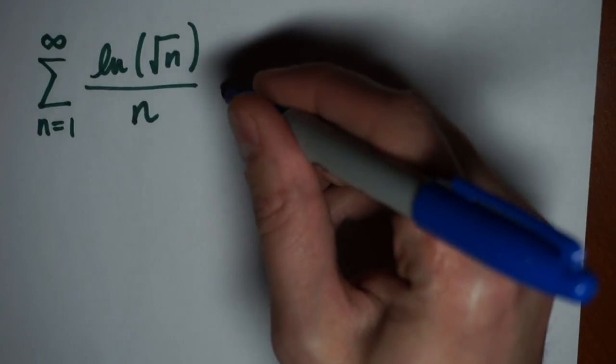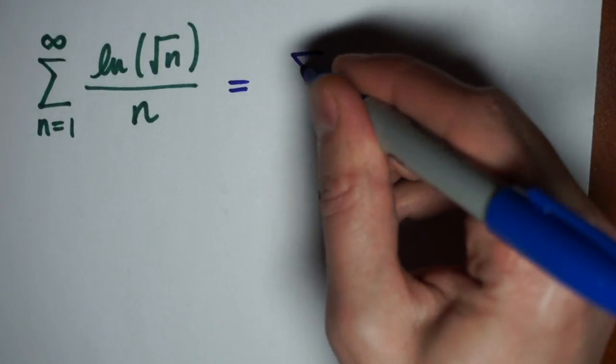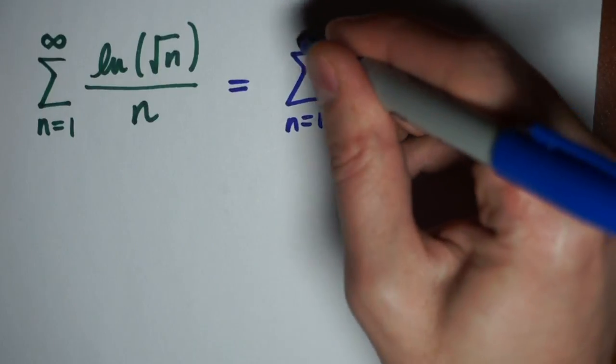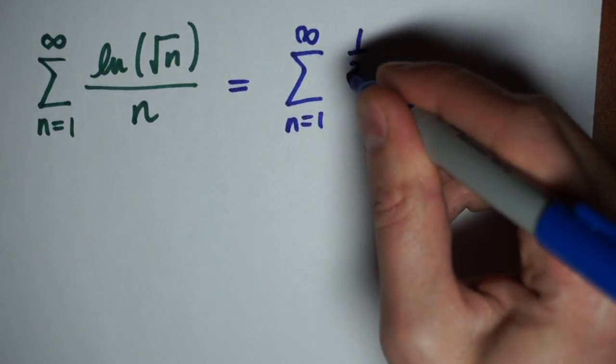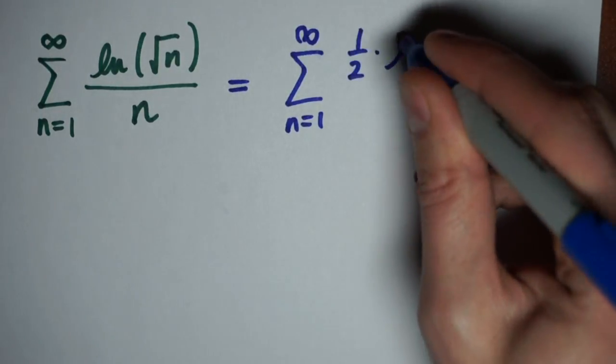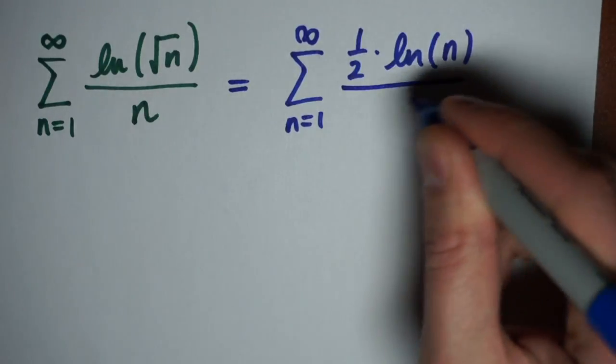In this video we'd like to determine whether this particular series converges or diverges. First I'm going to simplify this a little bit by rewriting the log as one-half times the natural log of n divided by n.